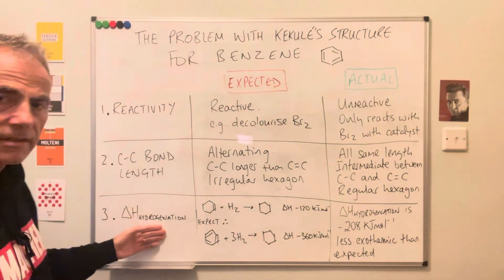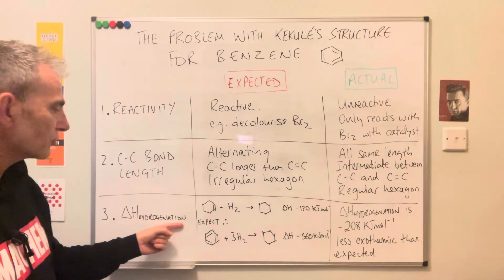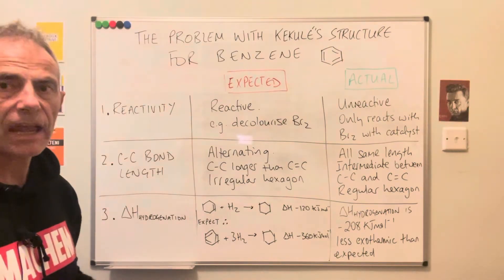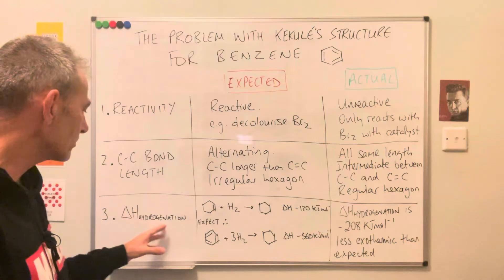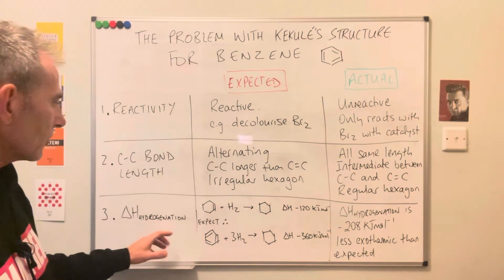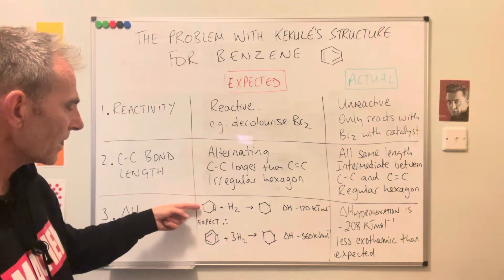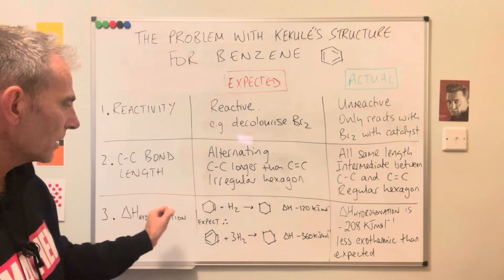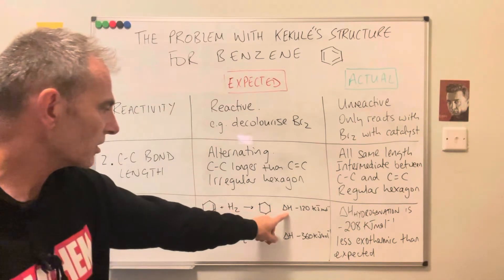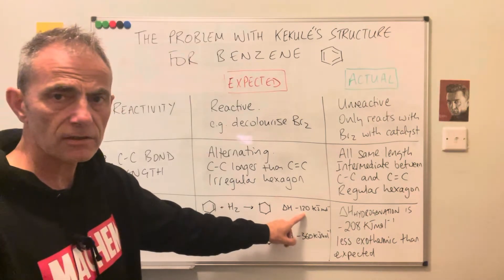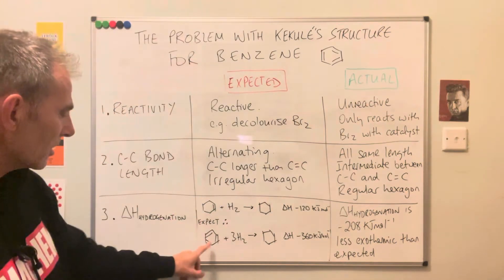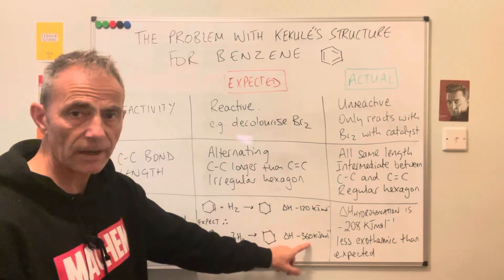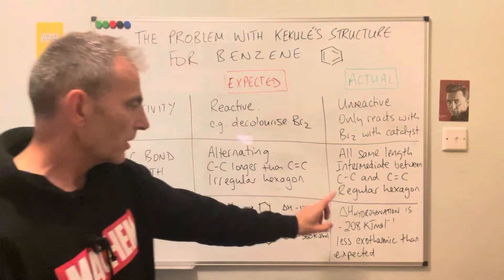The third piece of evidence is linked to the enthalpy change of hydrogenation — be careful not to say hydration, and make sure you say the enthalpy change of hydrogenation specifically. They linked it to cyclohexene's enthalpy change of hydrogenation. Cyclohexene is a six-membered ring, and when it reacts with hydrogen the enthalpy change is −120 kilojoules per mole. So from Kekulé's structure, with its three carbon-carbon double bonds, you'd expect benzene to be three times that — that's the expected value.